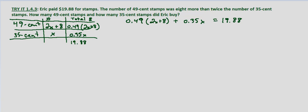So we'll go ahead and distribute the 49 cents. That gives us 0.98x plus 0.49 times 8, which is 3.92, plus 0.35x, and that still equals $19.88.